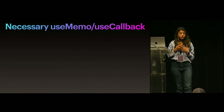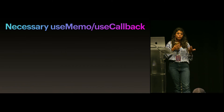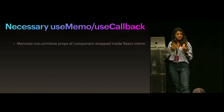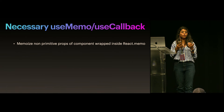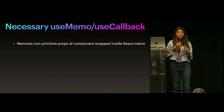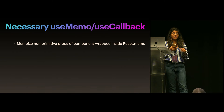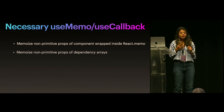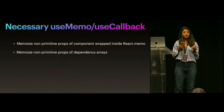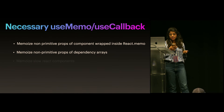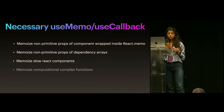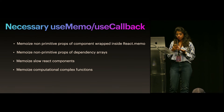In short, we should not use useMemo and useCallback for everything — not wrapping every function or every variable. But the necessary use cases are: memoize non-primitive props if you are using React.memo, memoize non-primitive values in dependency arrays, and memoize slow components and computationally complex functions.